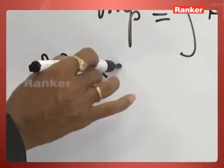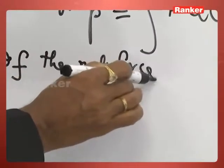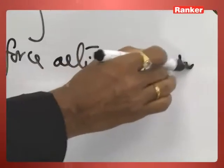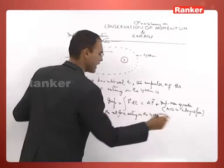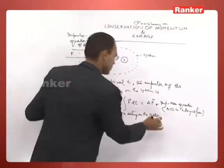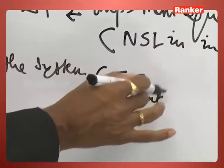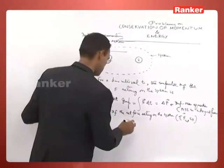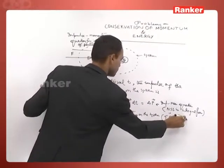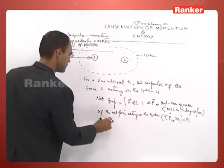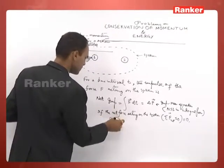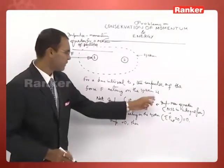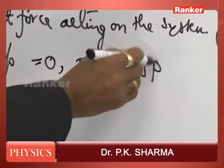If the net force acting on the system from outside — the net external force — is equal to zero (because the sum of all internal forces is always zero), then the net external force on the system is zero. The impulse of the external force acting on the system will be equal to zero, and therefore the change in momentum of the system will be equal to zero.